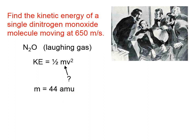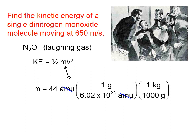We know that one molecule should have a mass equal to the number of AMUs we can find from the periodic table. Each nitrogen atom has a mass of about 14 AMUs, and each oxygen atom has a mass of about 16 AMUs. Adding those up gives 44 AMUs, which is not the correct unit — we need kilograms. One gram has the same mass as 6.02 × 10²³ AMUs, so we cancel the AMU units. Then, since one kilogram is 1,000 grams, we cancel the grams, and multiplying that out gives us our mass in kilograms.